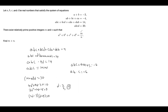We can do the same factoring: ab plus bc plus ca equals negative 4, and factoring out c gives c times (a plus b) plus ab equals negative 4. Since a plus b is negative 3, we get ab minus 3c equals negative 4, so ab equals 3c minus 4.